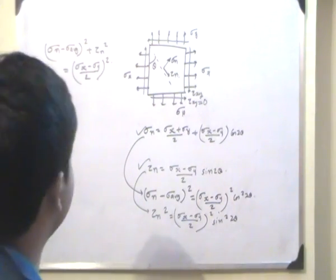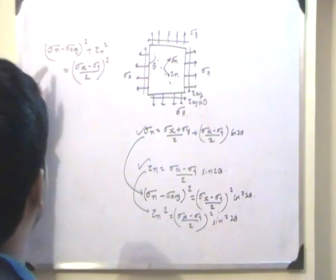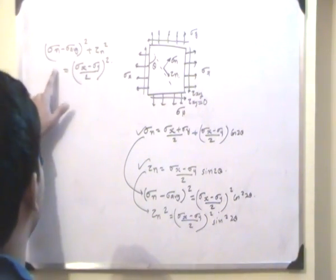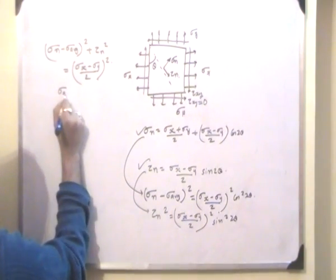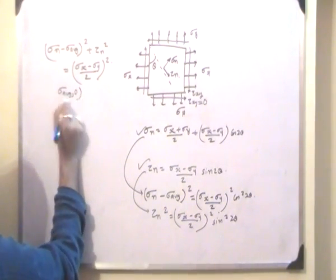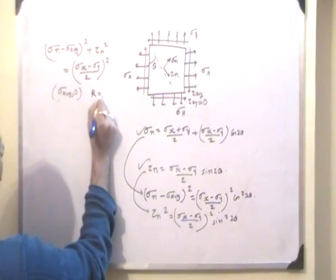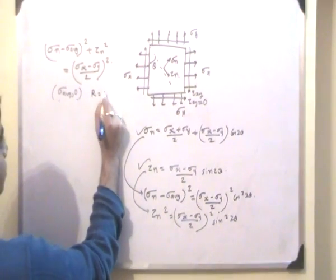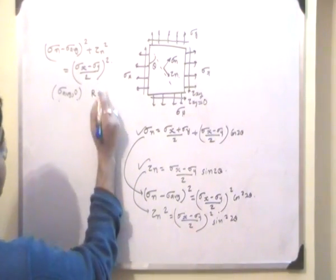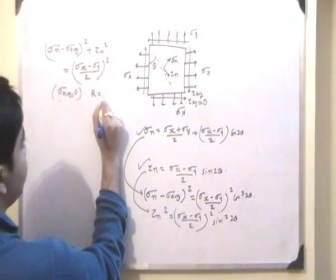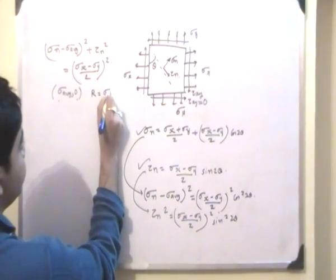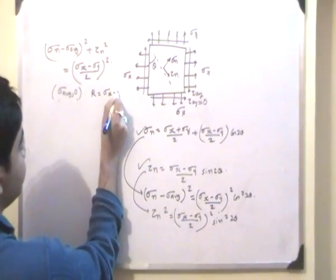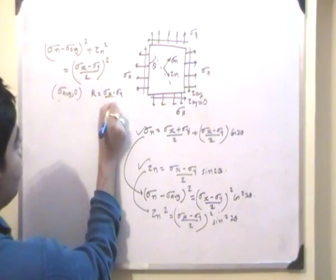Now, as is very evident, this represents the equation of a circle with center at (sigma_average, 0) and radius equal to sigma_x minus sigma_y by 2.